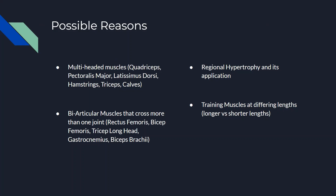Hence different functions are seen due to this characteristic of muscles. You see regional hypertrophy and its application, which we'll get to in a second. Other possible reasons include training muscles at different lengths — training a muscle at a longer length or a shorter length.